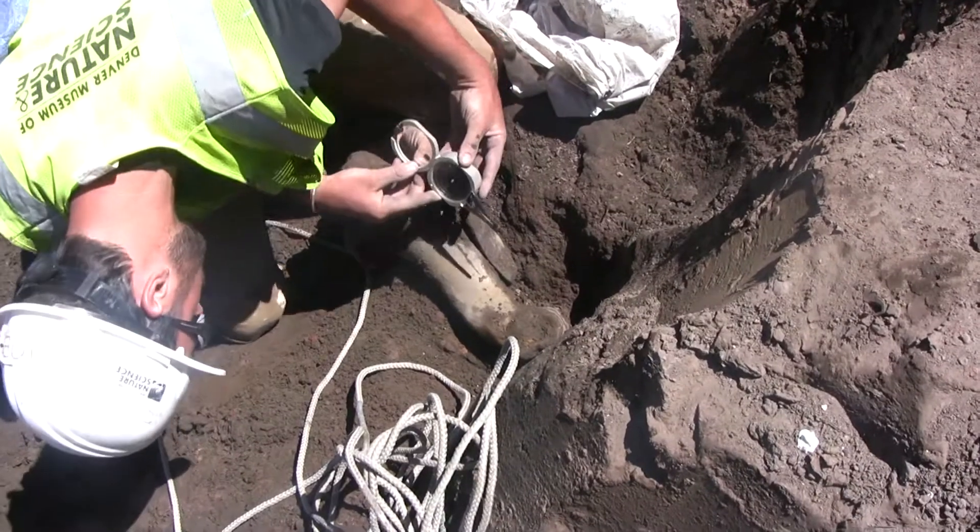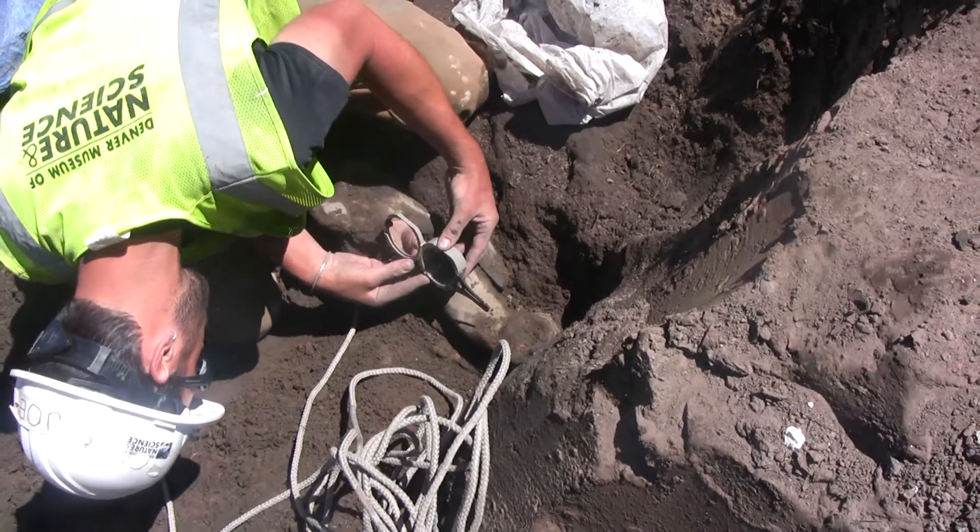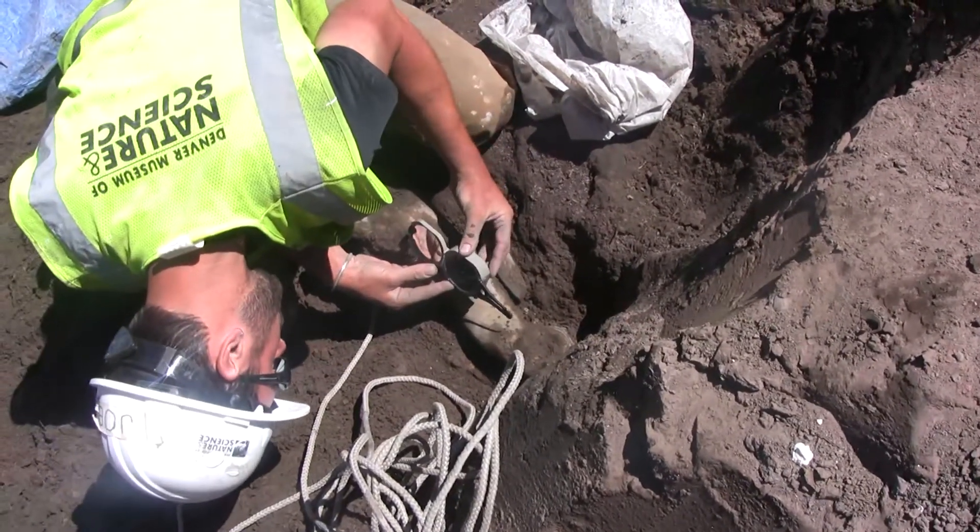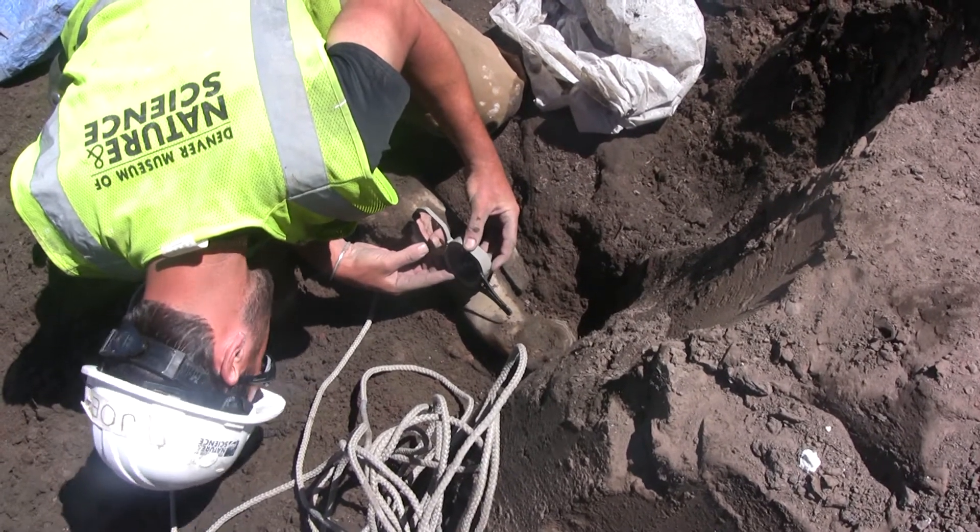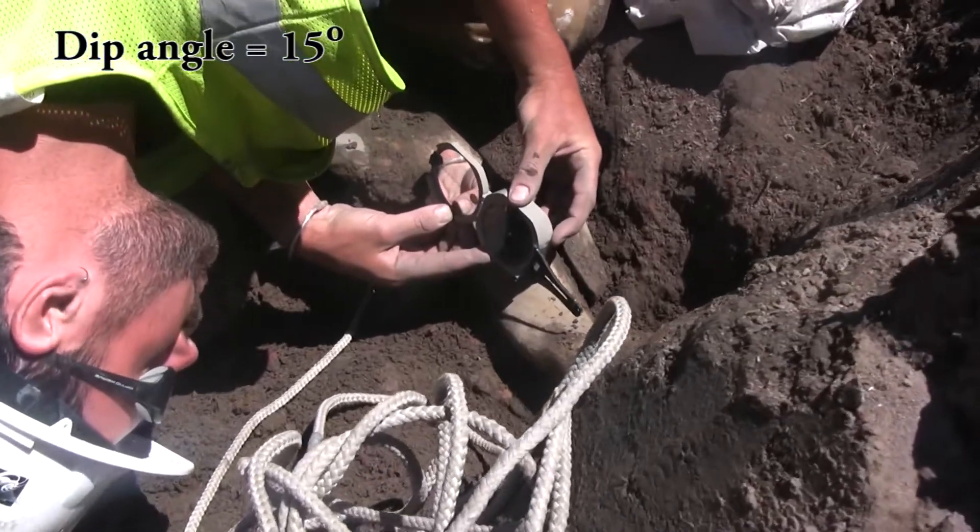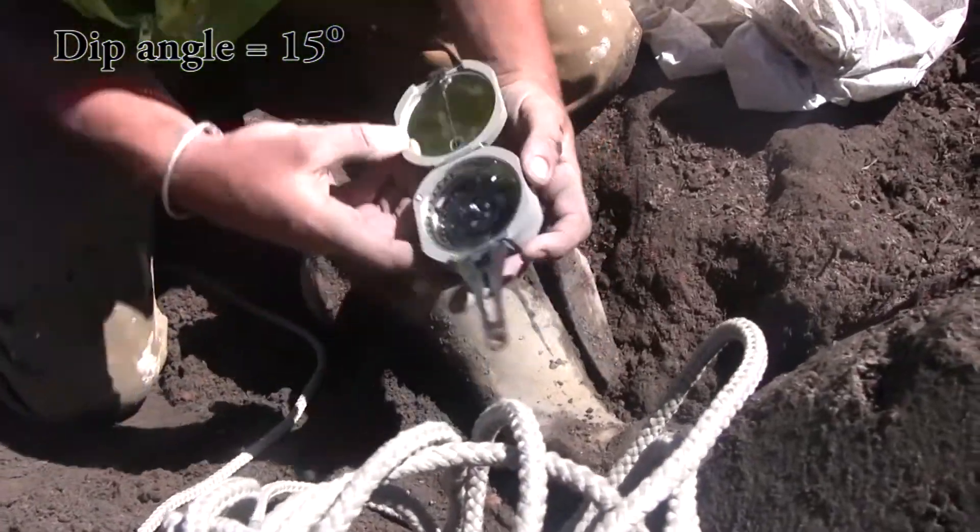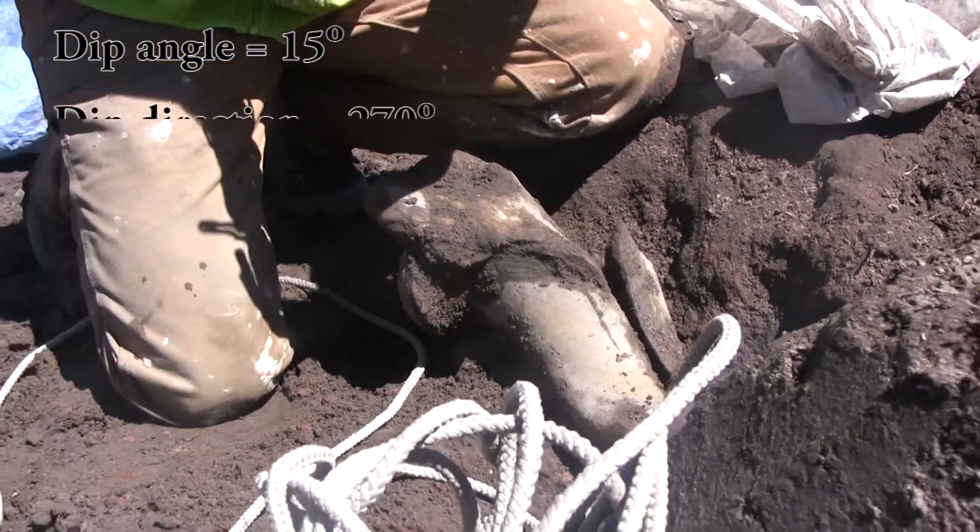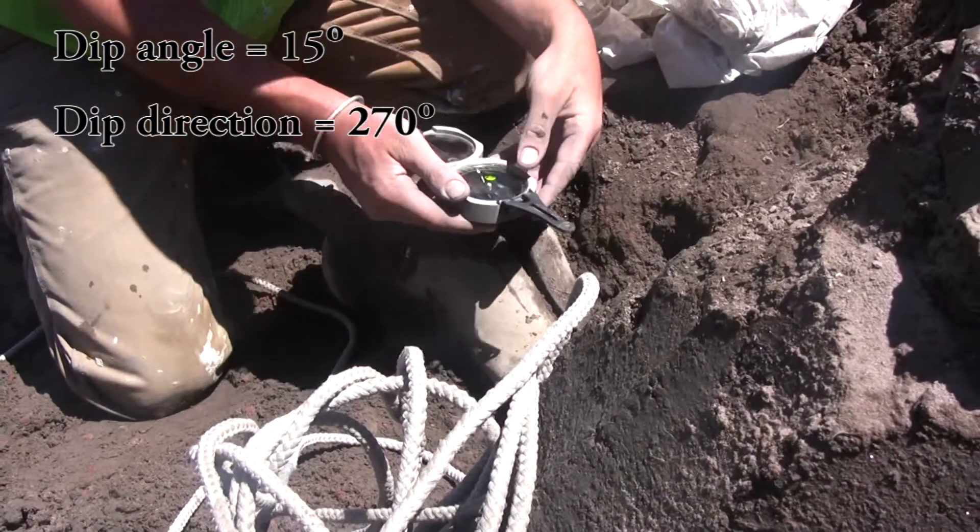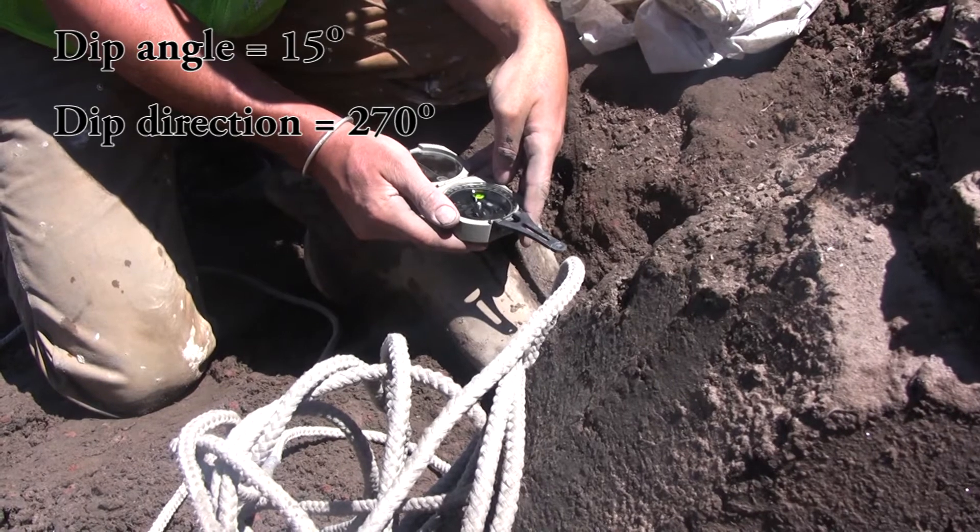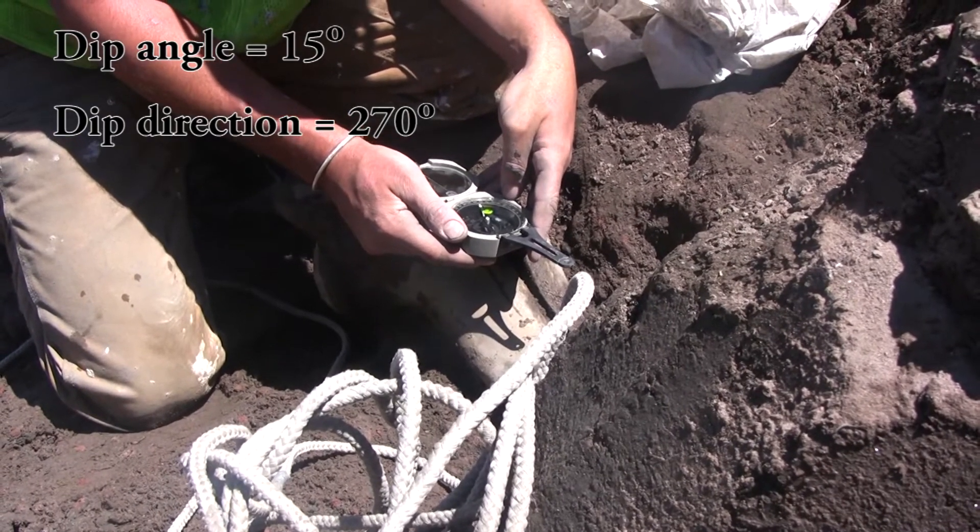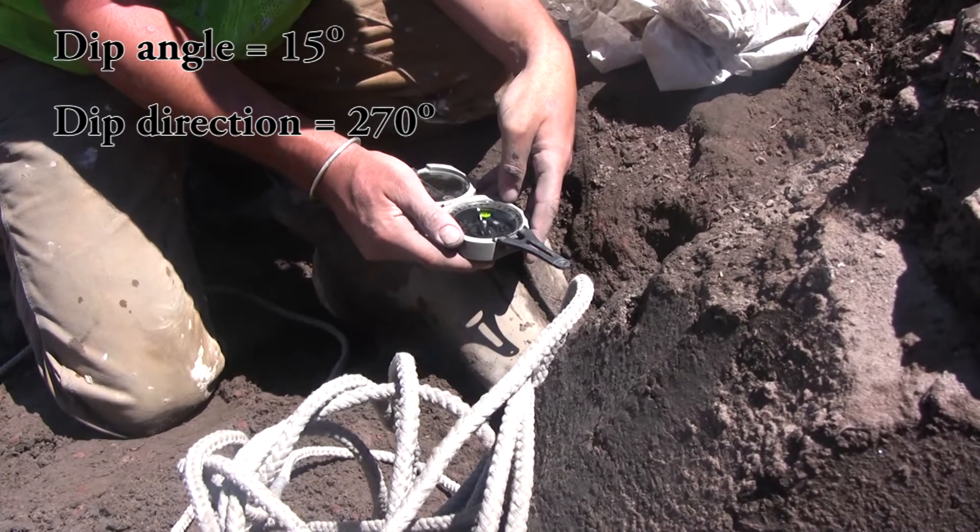So let's say we've got an Ice Age bison femur, a rather linear object, and you want to measure the position in which it was found. So you note that it is dipping down 15 degrees from horizontal, that's the plunge or dip, in the direction of 270 degrees on the compass. That's the azimuth trend or dip direction.